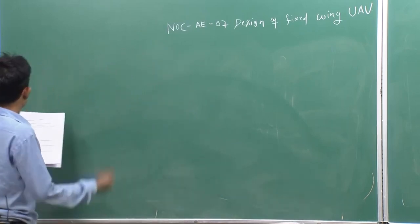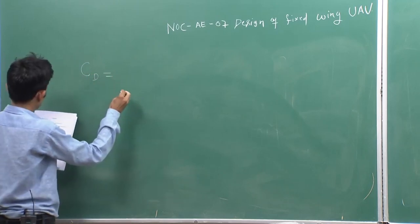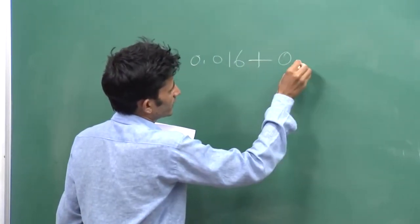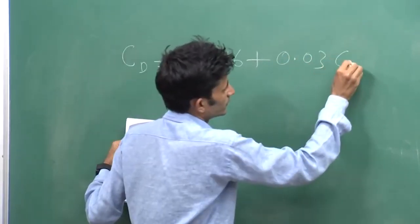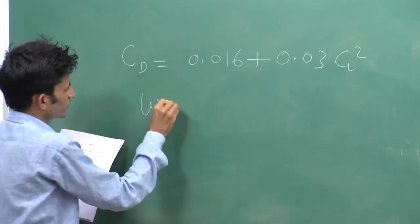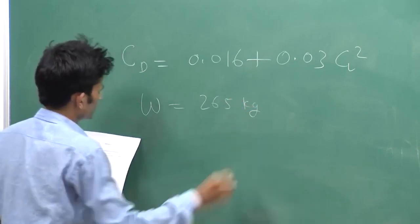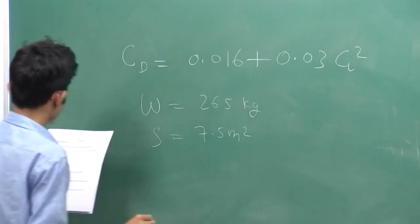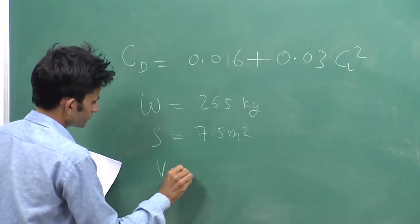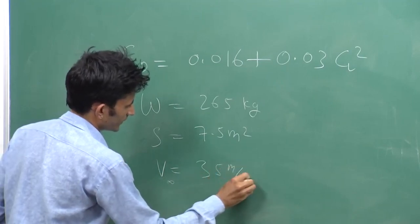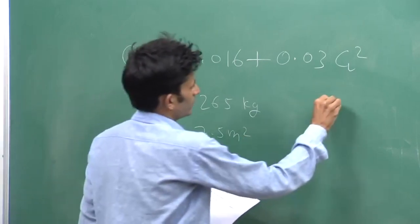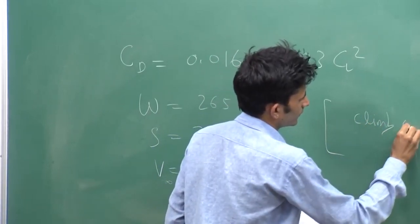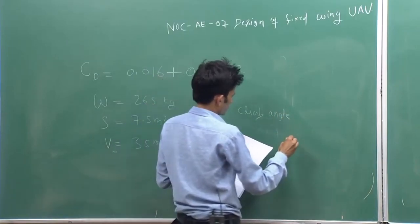In assignment 5, it is given that drag polar CD equals CD naught which is 0.016 plus K·CL², where K is 0.03. The weight of the UAV is given as 265 kg, wing area is 7.5 m², UAV climbing speed is 35 m/s, and it is given that small angle assumption — climb angle less than 5 degrees.